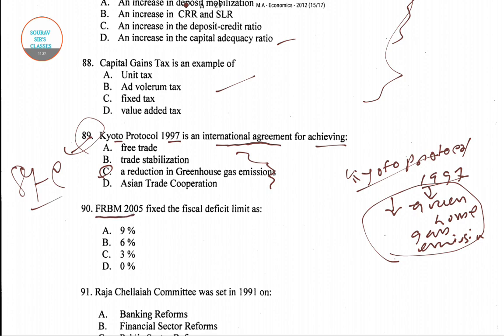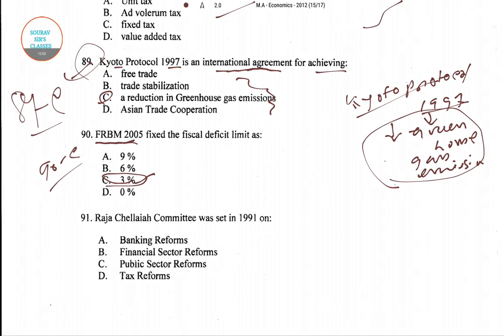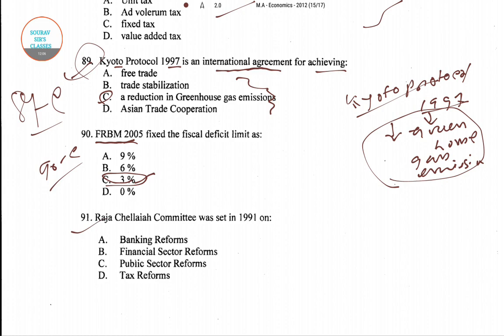Question number 90: FRBM 2005 fixed the fiscal deficit limit as — FRBM 2005 fixed the fiscal deficit limit at 3%, so option C is the right answer. Question number 91: Raja Chelliah Committee was set up in 1991 on — out of four options, the right one is tax reform. The Raja Chelliah Committee was established in 1991 on tax reform.